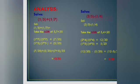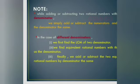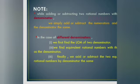Since denominators are now same, 7/35 plus 5/35 equals 7 plus 5 divided by 35, which is 12/35. The same approach applies to subtraction. Summary: when adding or subtracting rational numbers with the same denominator, simplify the numerators and keep the denominator the same. For different denominators, first find the LCM, then find equivalent fractions with the LCM as denominator, then add or subtract.